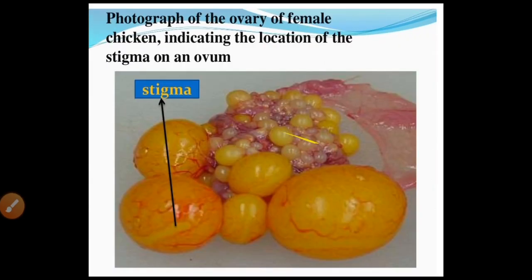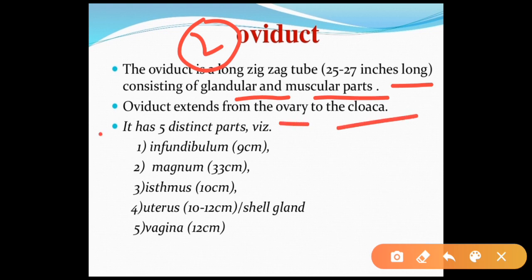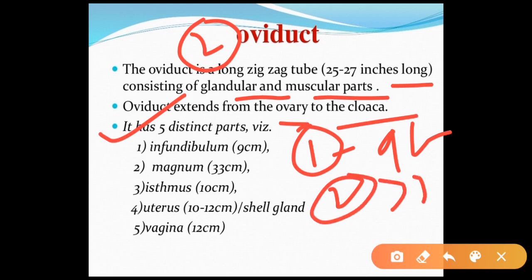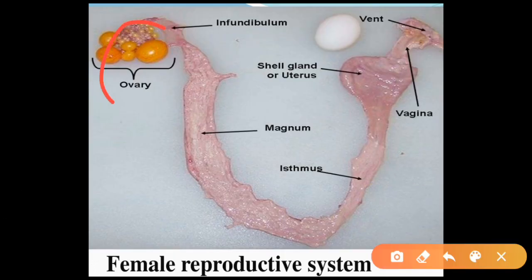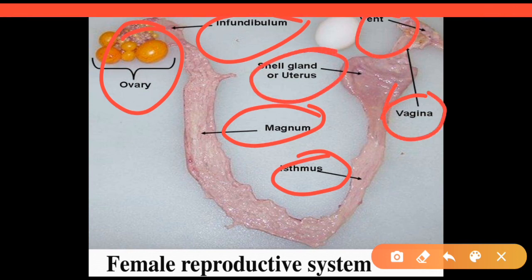The oviduct is a long zigzag tube about 25 to 27 inches long, consisting of glandular and muscular parts. It extends from the ovary to the cloaca. There are five distinct parts: infundibulum (about 9 cm), magnum (about 33 cm), isthmus (about 10 cm), uterus or shell gland (about 10–12 cm), and vagina (about 12 cm). In the diagram: ovary → infundibulum → magnum → isthmus → shell gland/uterus → vagina → vent → egg.